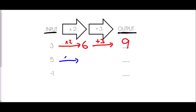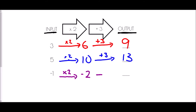If I do the same for five, the first thing is to multiply it by two — five times two is ten. The next step is to add three, so ten plus three is thirteen. Finally, with negative one, I multiply by two — negative one times two is negative two — then add three, so negative two plus three is positive one.